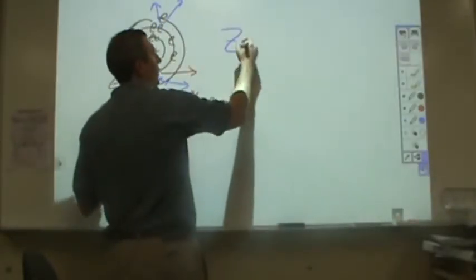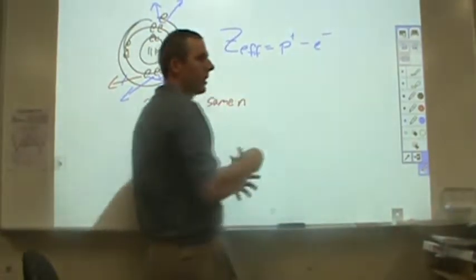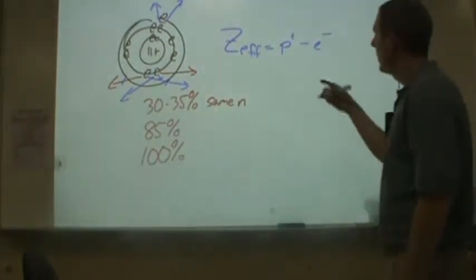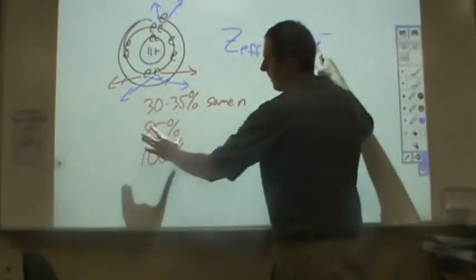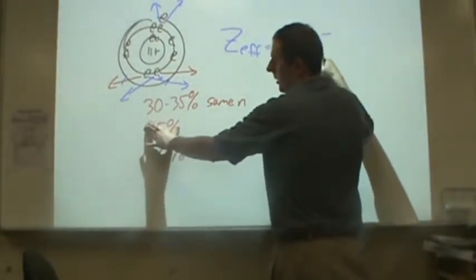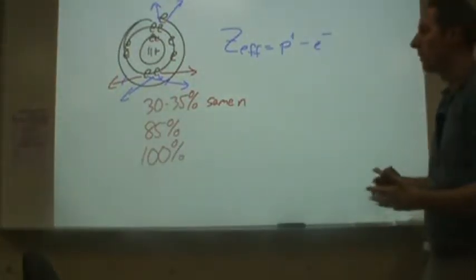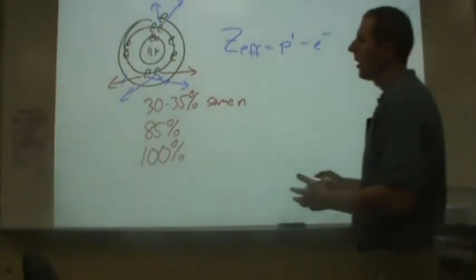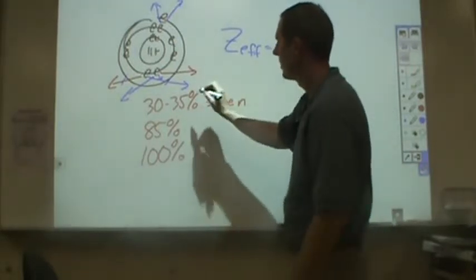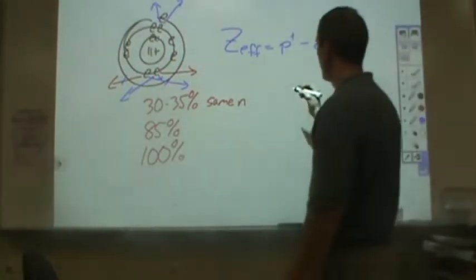In chemistry we typically calculate effective nuclear charge as the number of protons minus the number of electrons between that energy level and the nucleus. In reality, what we should do is use 0.85 for each electron in the energy level directly below and about 0.3 for each electron in the same energy level. When we incorporate those facts — a little shielding from the same level, more from one level below, and a full proton's worth from deeper levels — things start to make more sense.